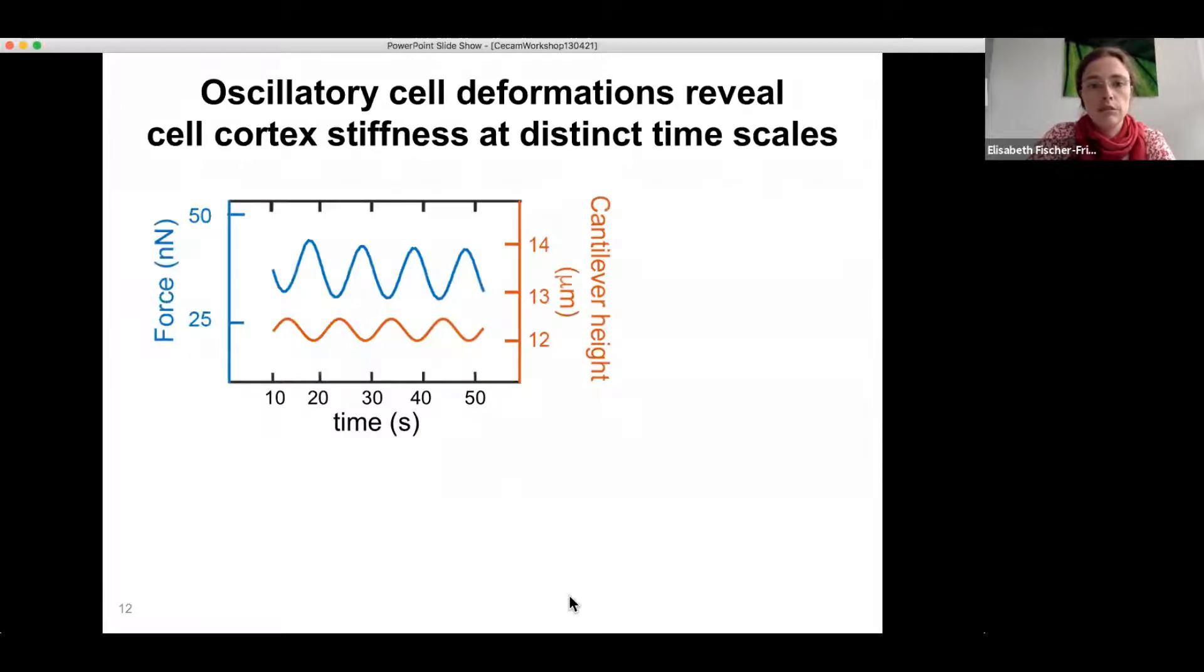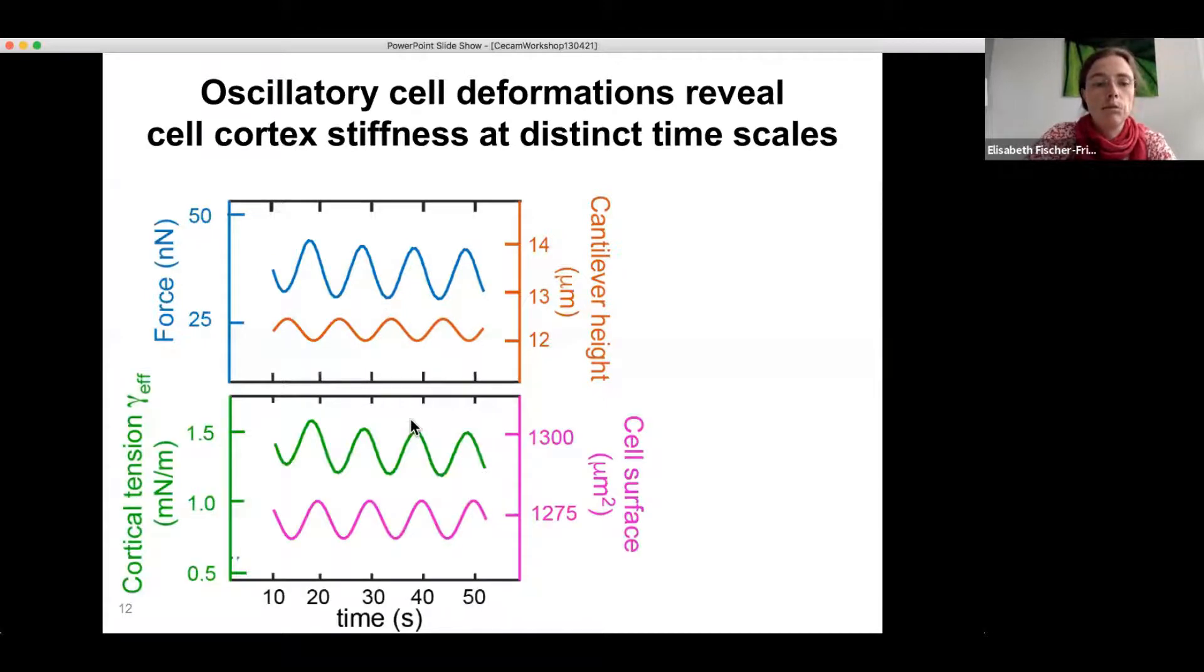So this is our readout from the experiment. We impose cantilever height oscillations at a specific frequency, and we see in response force oscillations recorded by the atomic force microscope. And then we apply our data analysis scheme to extract cortical tension over time, essentially using Laplace's law as I was showing you before. And we compute cell surface area over time using the cantilever height and anticipating that the cellular volume stays constant.